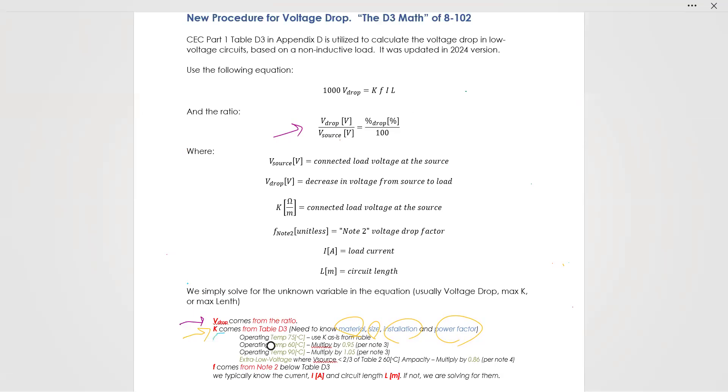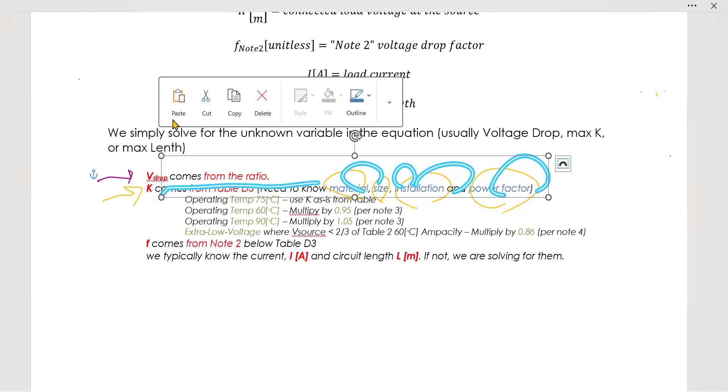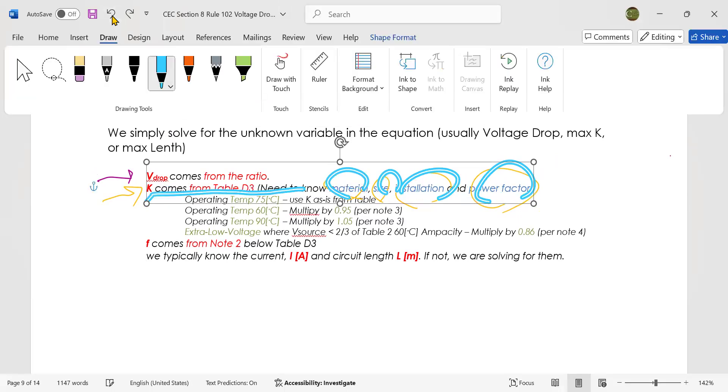The K value comes from table D3 that I just showed you when we circled material, size, installation, power factor. We go into that table, and all we do is get the value - we get the K value. But, if the operating temperature is 75 degrees, then we're good. We use it just as it is from the table.